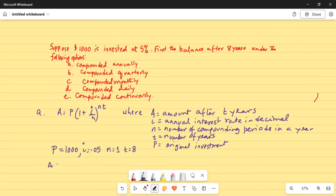So A is equal to 1000 times (1 + 0.05/1) to the power of 1 times 8, or 1000 times 1.05 raised to the power of 8. And that is equal to, we can use our calculator, and that is 1000, $1477.46. So that is the answer for part A.